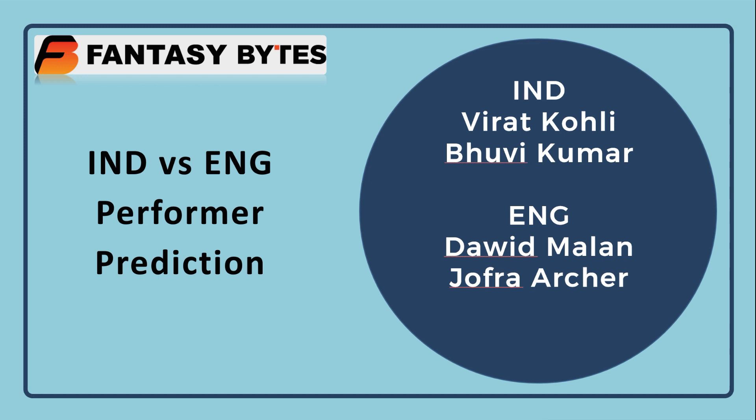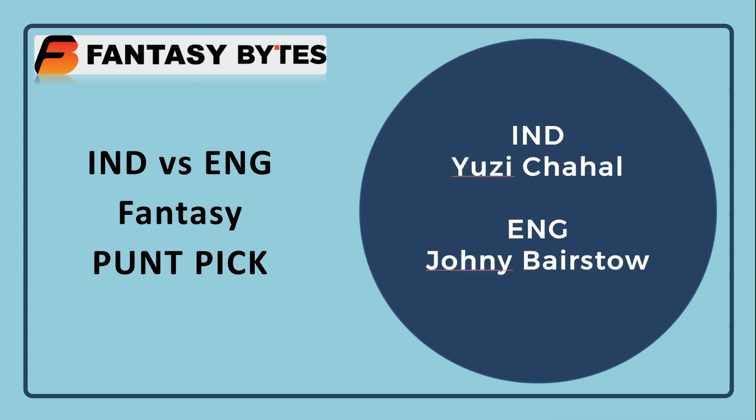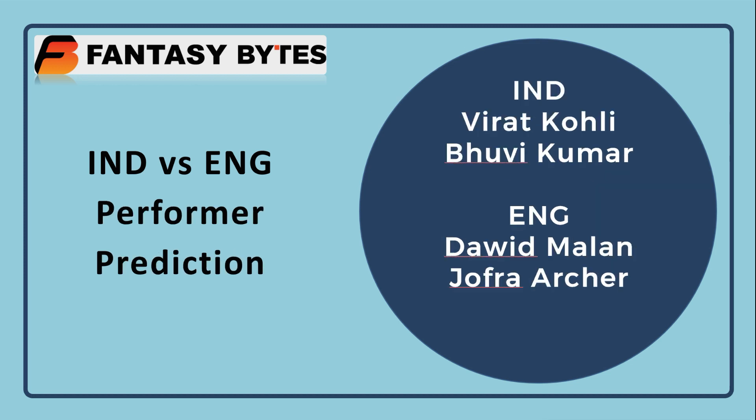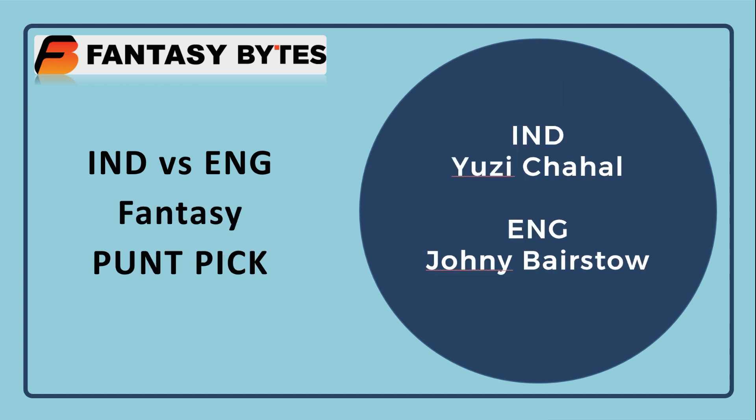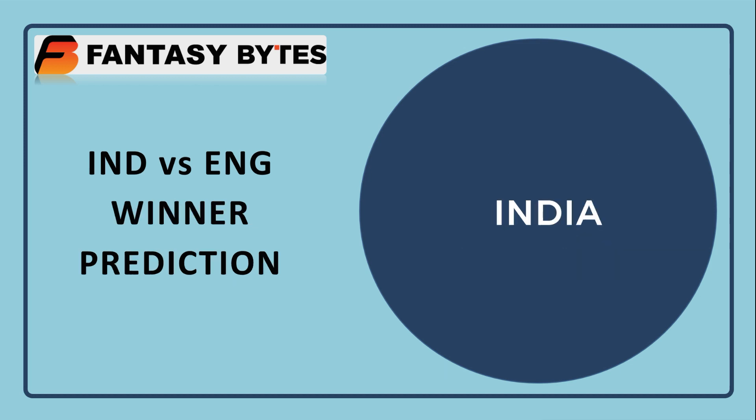David Malan is due a score of 50 plus for England, and Jofra Archer with the ball. On a spinning wicket, Adil Rashid will also be a threat with the ball. For punt picks, Yuzi Chahal — though a bit predictable — will be a big danger for England if it's a sticky wicket. On the other side, Johnny Bairstow is my punt pick.